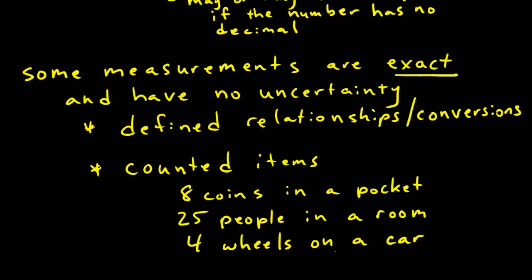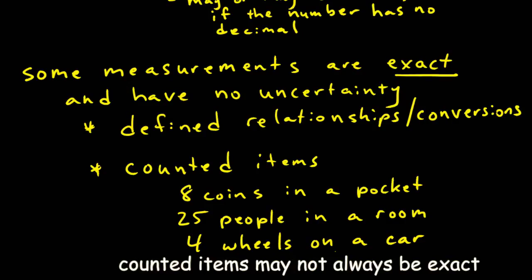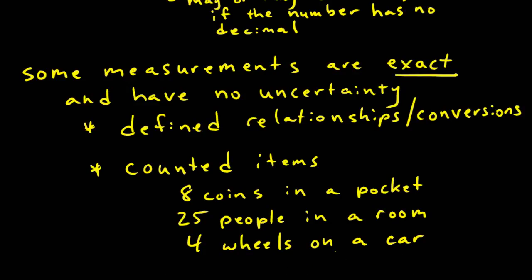Now just because we count doesn't mean it will always be exact. For example, if we're counting a large number of coins in one's pocket, or a large number of people in a room, it is possible we could wind up with some uncertainty, simply due to the large quantities involved.